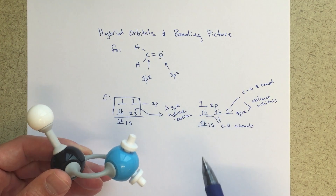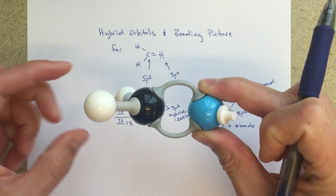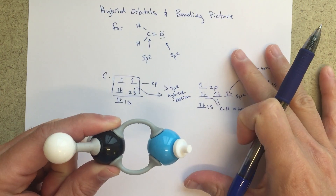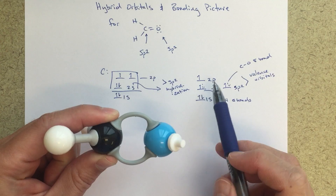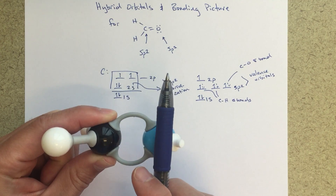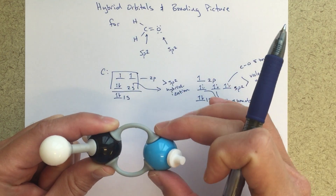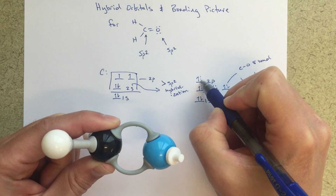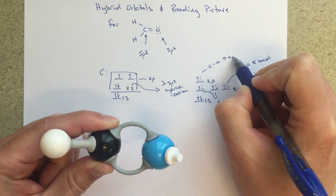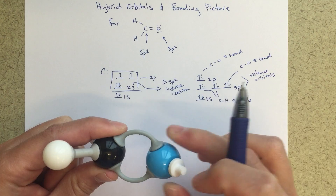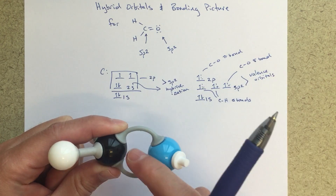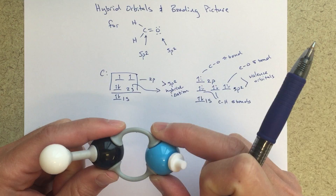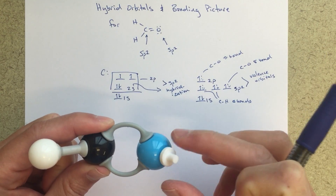Now this leftover 2p orbital — what's going on there is if I turn my molecule this way, so I've got my hydrogens going into the board and coming out of the board, I'm going to have a leftover p orbital. This is an sp2 hybridization, so I'm going to have that leftover 2p orbital going up and down. That leftover p orbital can then interact with a leftover p orbital on this oxygen and share some more electrons. So we're going to put in another electron here — this is my CO pi bond. That really forms the two different bonds between carbon and oxygen: one where the electrons are directly in between, and the other is this pi bond type.